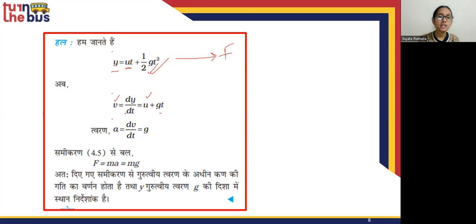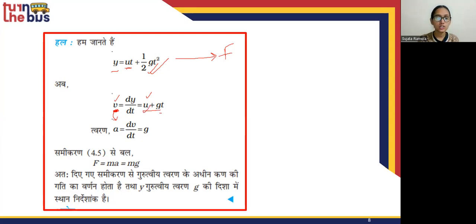We will again do this differentiation. When we differentiate, U is a constant so its derivative is 0. Differentiating ½gt² with respect to t gives gt, and differentiating again gives acceleration a equal to G. So we conclude that a = g.